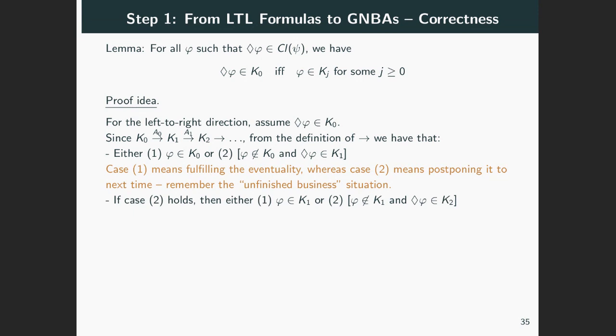Now, if case two holds, meaning eventually φ is in K₁, then we apply the same reasoning for K₁ and obtain two cases. Either φ is in K₁, or is not in K₁ and eventually φ is in K₂. And now the same thing for K₂, and so on. So if case two keeps being the case, it means that we keep kicking the can down the road without having φ in the scenarios Kᵢ.